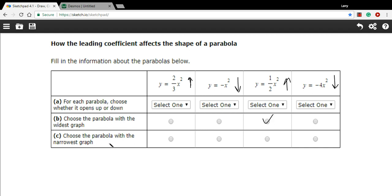And then choose the parabola with the narrowest graph. The parabola with the narrowest graph had the largest coefficient. So we've got a 1 here, 2 thirds, 1 half, and here's 4.